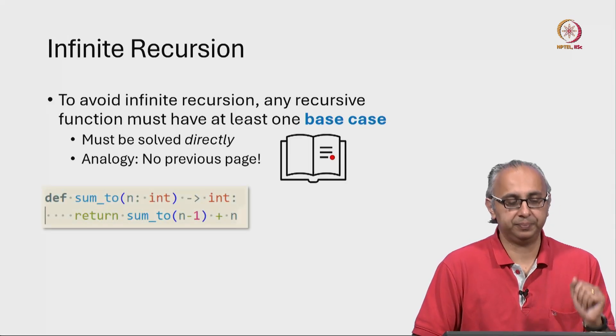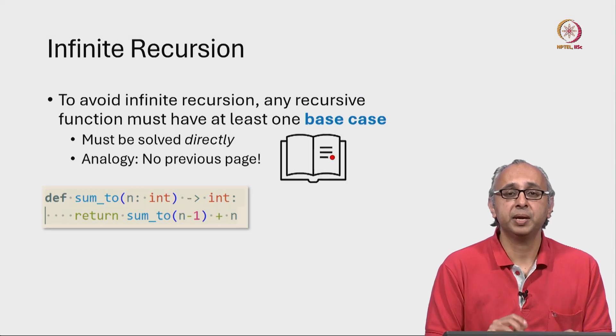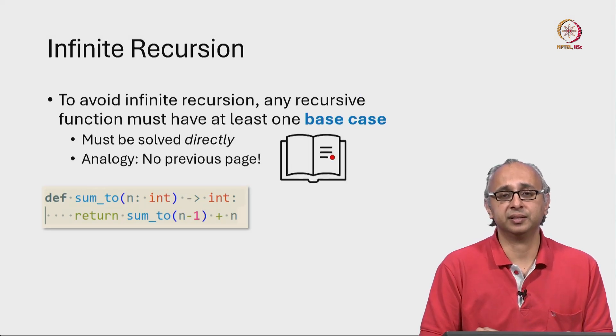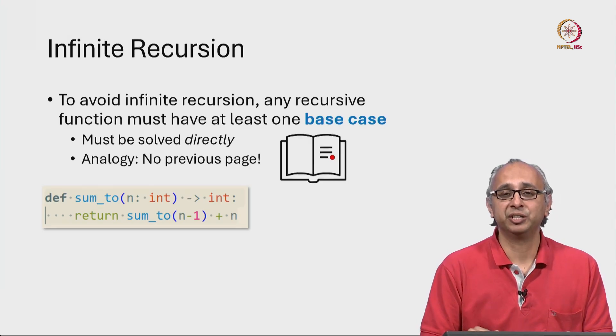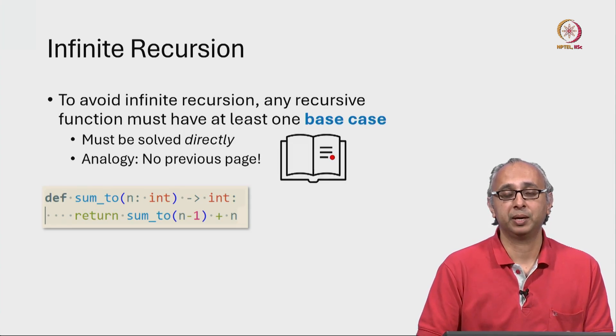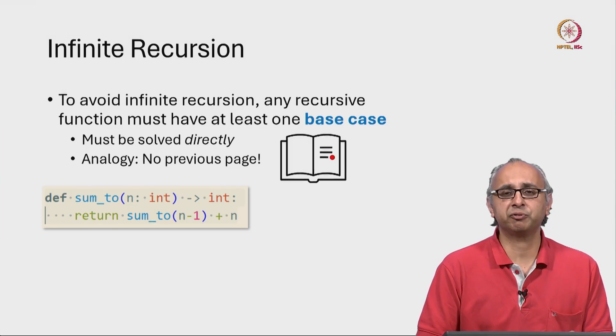So this is our sum_to function which is buggy. It has infinite recursion. In my IDE, I have highlighted this piece of code. Now, let me ask my generative AI to assist me in fixing this problem. In GitHub Copilot and indeed many other generative AI tools,